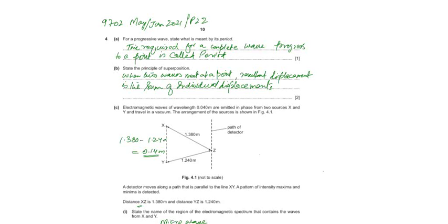The topic is Spatial Wave Superposition. Part A. For a progressive wave, state what is meant by its period. Time required for a complete wave progress to a point is called period.